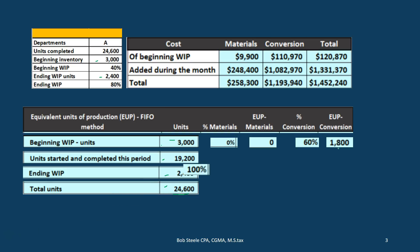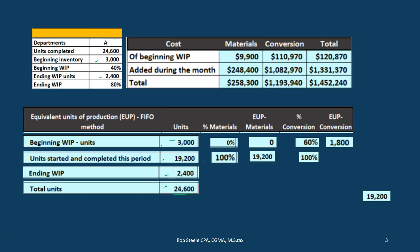For units started and completed, this is straightforward. If we started and completed them, 100% of materials went in this month, so equivalent units for materials equals 19,200. Same for conversion — all direct labor and overhead went in this month — so equivalent units for conversion also equals 19,200. Total units equals equivalent units for both materials and conversion.